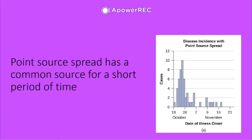In epidemiology, a point source spread is the spread of a disease from a single common source, occurring during a short period of time. On an epidemic curve, the x-axis shows date and the y-axis shows number of cases. There is a rapid spike in cases — for example in mid-October — followed by a rapid decline as cases resolve, returning to baseline. The disease may be completely gone by the following month.